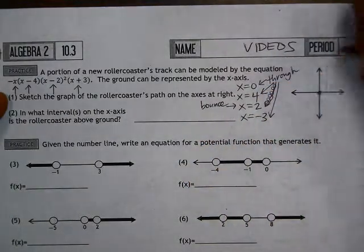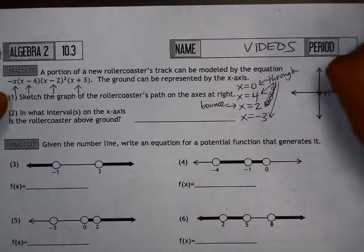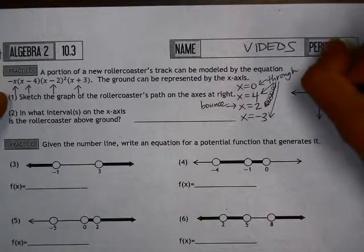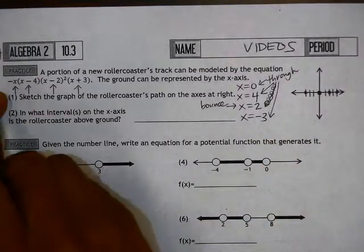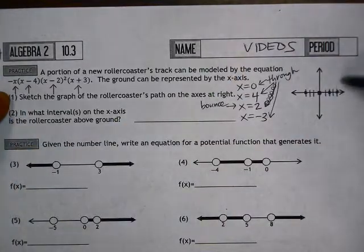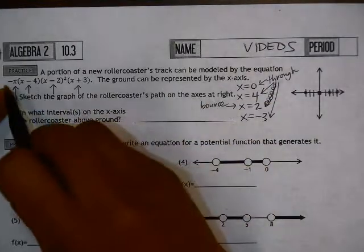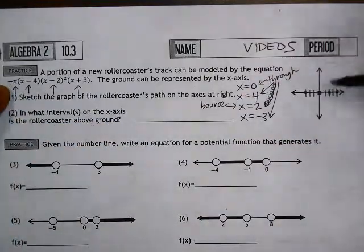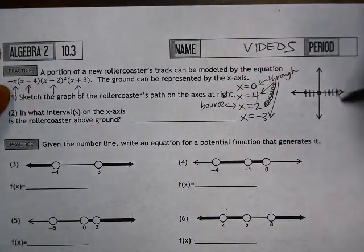So let's go ahead and plot our x-intercepts: 0, 4, 2, and negative 3. I'm going to start graphing on the right side here. This is the end of the graph. The coefficient in the front of the equation is negative, which tells me that the graph is going to be negative on this side, on the right side.